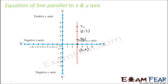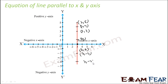This point has x equal to 3, y equal to 4. This point has x equal to 3, y equal to 5. And also 3 comma minus 2, and 3 comma minus 1. So if you see all these points, x is always 3 and y is any real number.